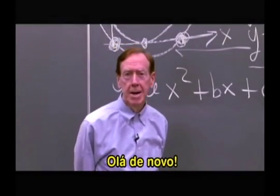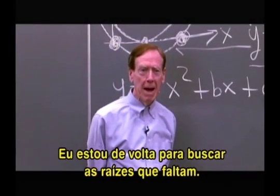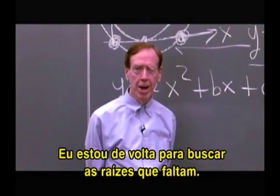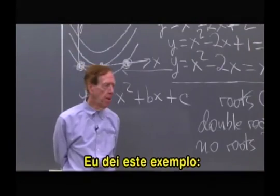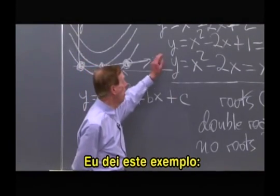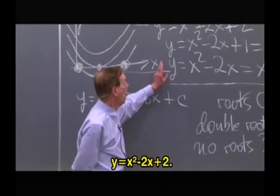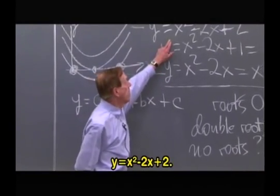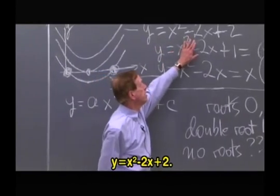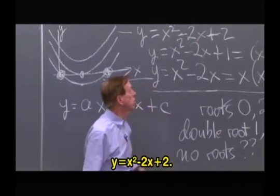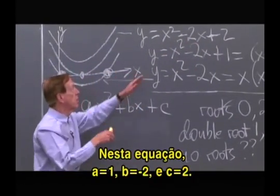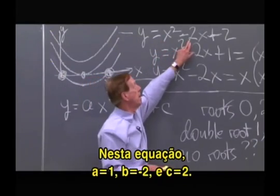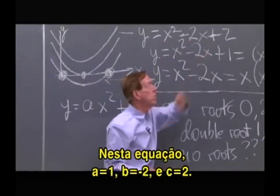Hi again. I'm back and still looking for those missing roots. You remember we had this example of x squared minus 2x plus 2 — so that was a particular choice of a equals 1, b equals minus 2, c equals plus 2.